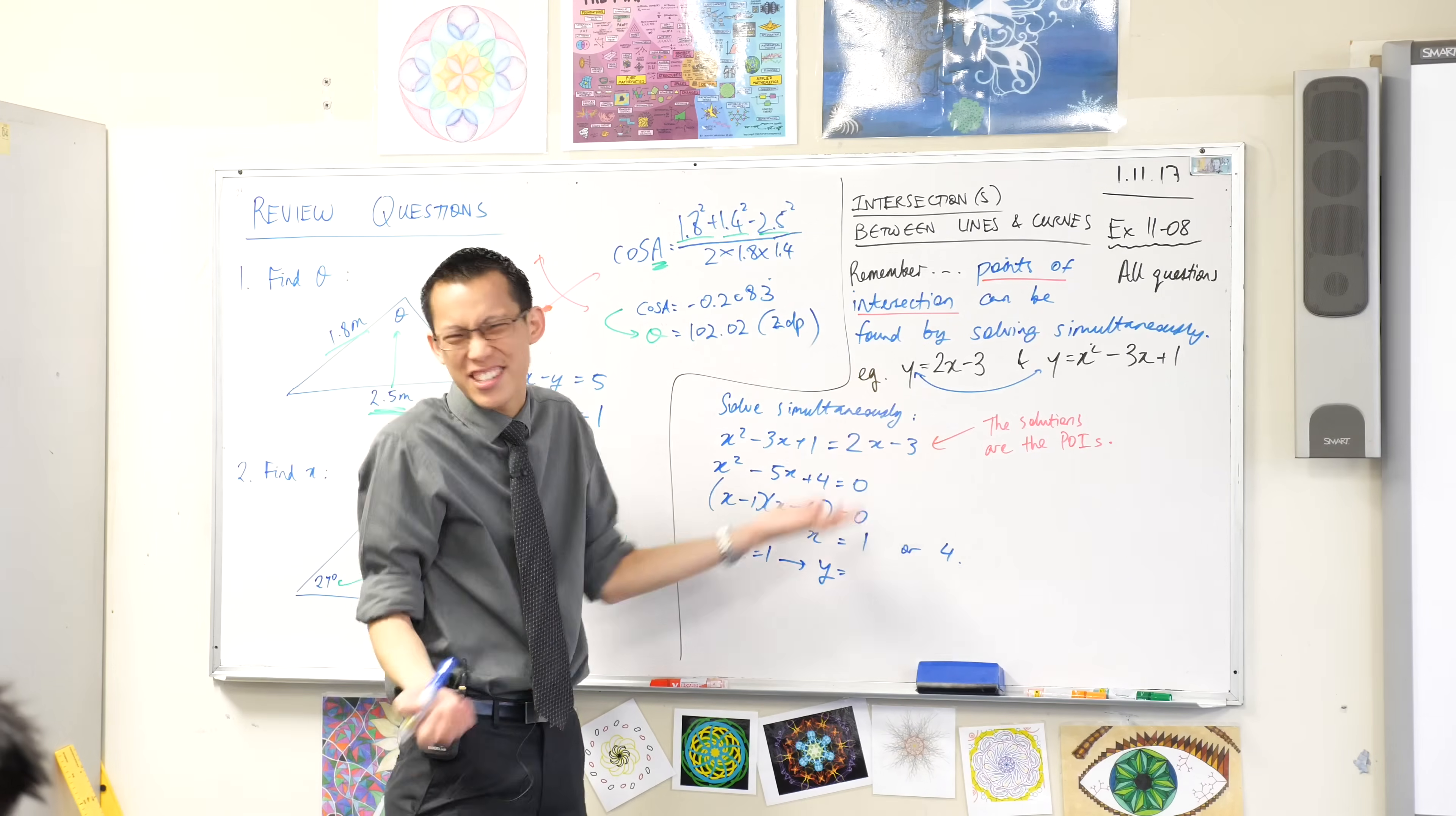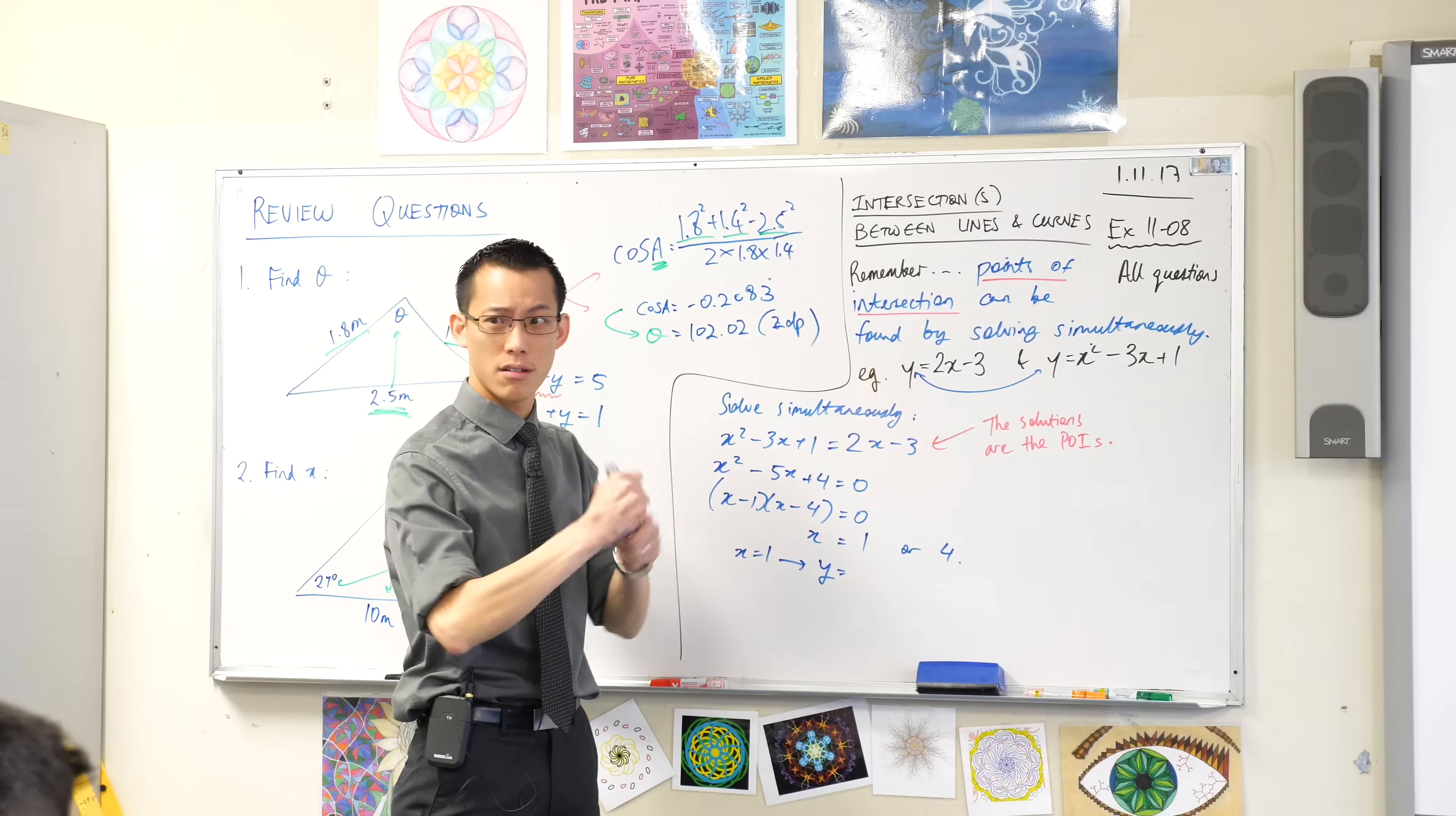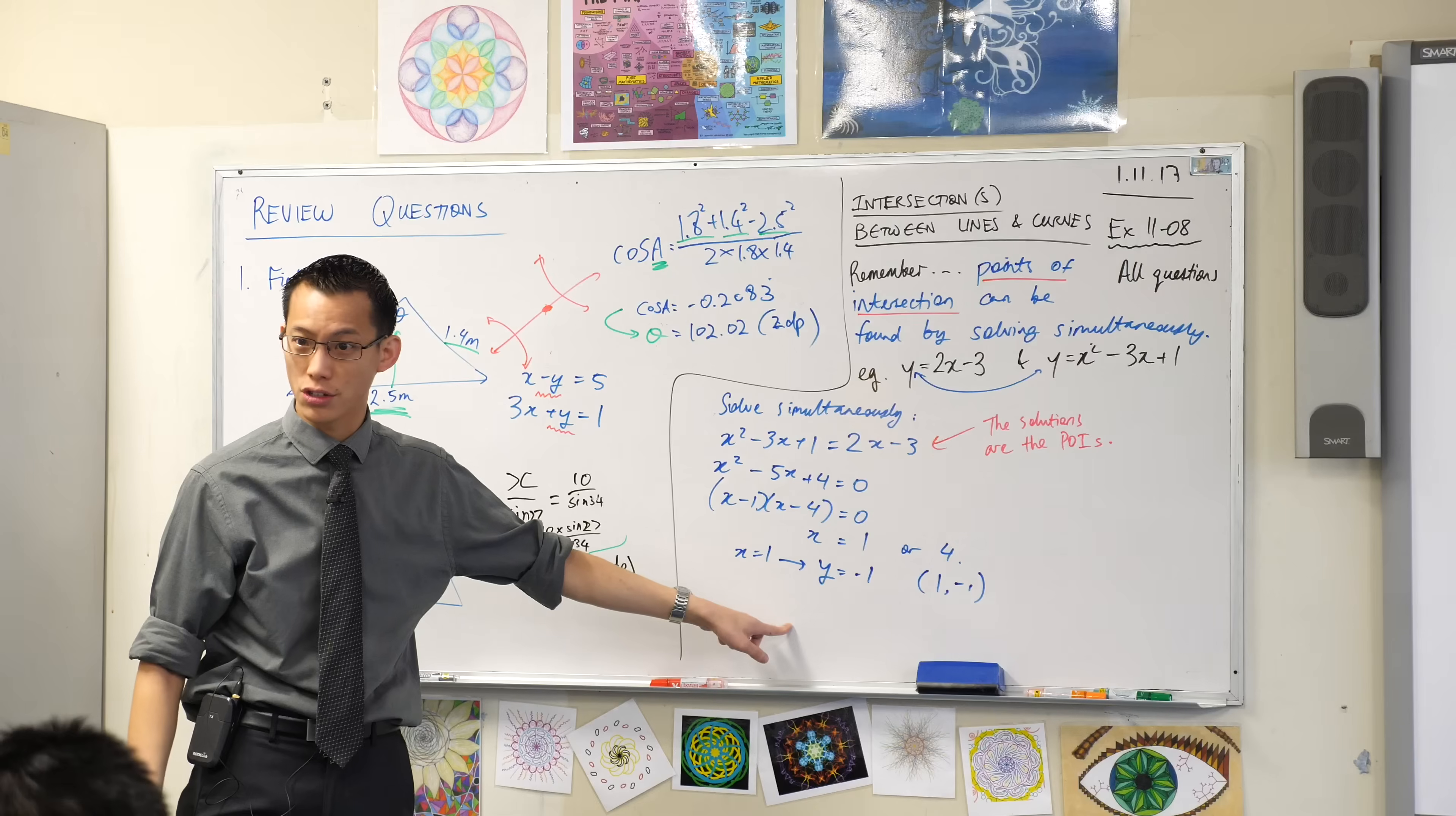Probably the first one. It's just simpler, right? Why choose a hard thing where you can choose a simpler thing? So when x equals 1, y will equal 2 times 1 take away 3, negative 1. So these two together, the x is 1, the y is negative 1. That's one of my points of intersection.